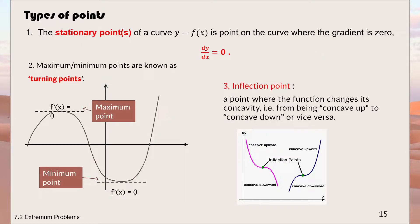As the previous diagram shows, we have three types of points: maximum, minimum, and inflection point. To find these points, we use the concept of stationary points. The stationary point of a curve y = f(x) is a point where the gradient is zero, so dy/dx must equal zero. From stationary points, we can classify them as either turning points or inflection points.